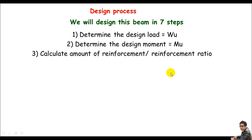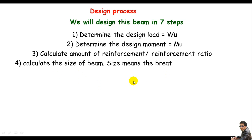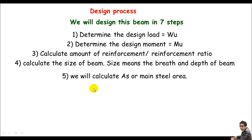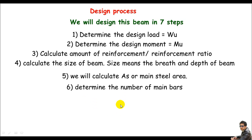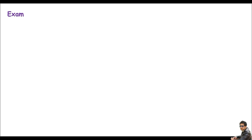Step three is calculating the reinforcement ratio, also known as rho or psi. Step four is calculating the size of the beam — meaning the breadth and depth. Step five calculates the main steel area As, step six determines the number of main bars, and step seven is a detailing check to verify the beam meets ACI code requirements. I'll work through an example for better understanding.